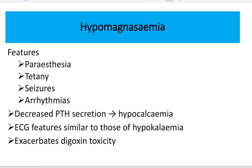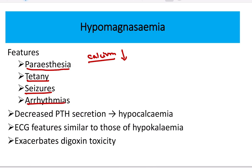The features of hypomagnesemia are similar to those of decreased calcium level. Magnesium, like calcium, is a neurosedative. When calcium or magnesium decreases, there is excessive hyperactivity of neurons, leading to features such as paresthesia, tetany, seizures, and arrhythmia. These are the features of hypomagnesemia.